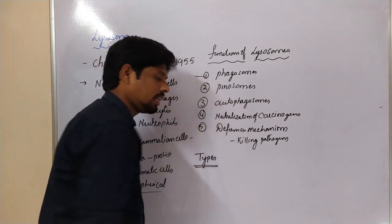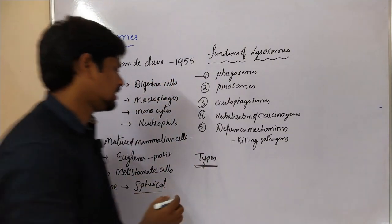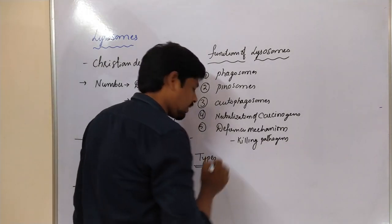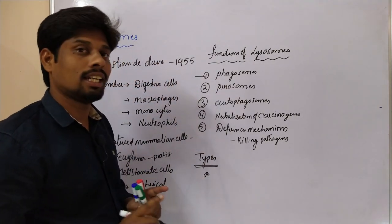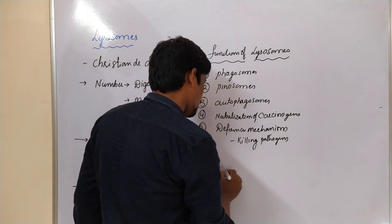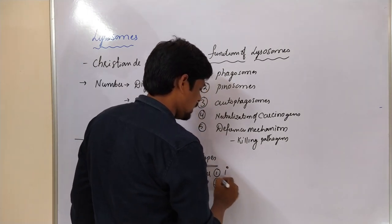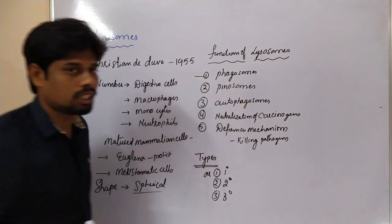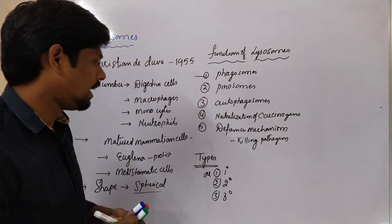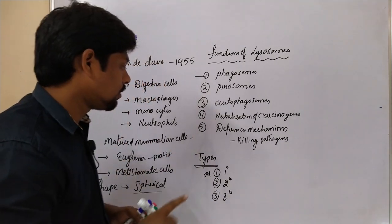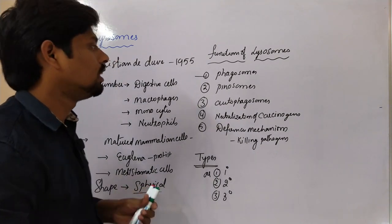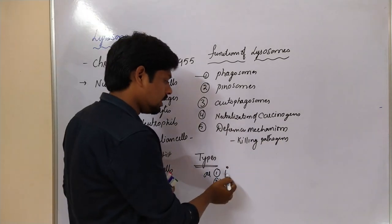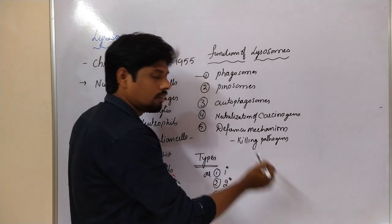How many types of lysosomes are present in a cell? There are three types of lysosomes: primary lysosomes, secondary lysosomes, and tertiary lysosomes. These are the three different kinds of lysosomes which result from the action of lysosomes during their functions — they convert from primary to secondary, and secondary to tertiary.